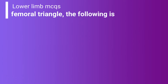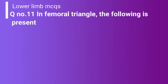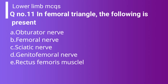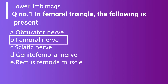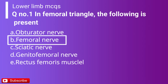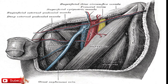Question number 11: In the femoral triangle, which of the following is present? Option A: obturator nerve. Option B: femoral nerve. Option C: sciatic nerve. Option D: genitofemoral nerve. Option E: rectus femoris muscle. The correct answer is option B, femoral nerve. The rest are false because they are not present in the femoral triangle. The contents of the femoral triangle are the femoral artery, femoral vein, and femoral nerve.